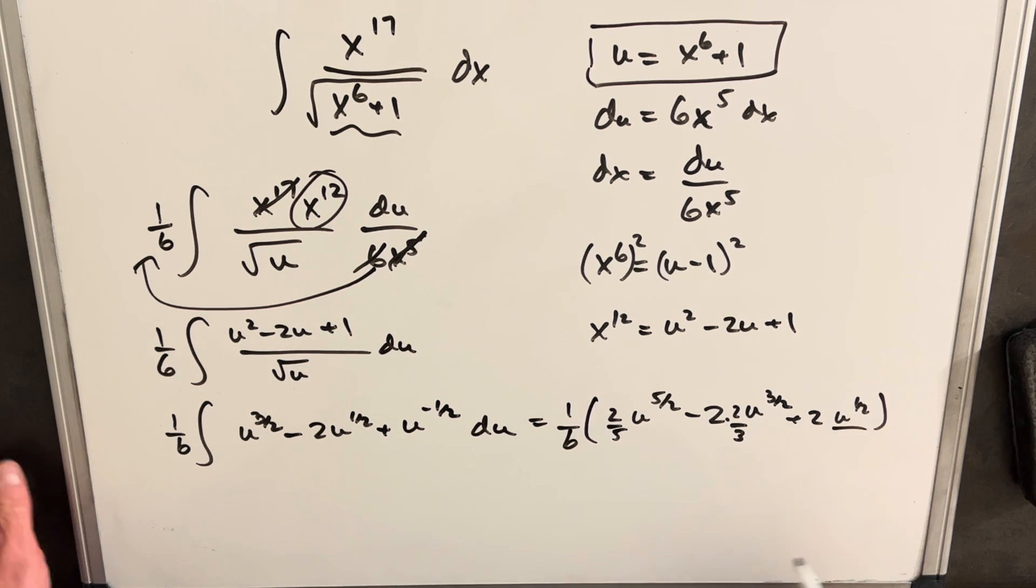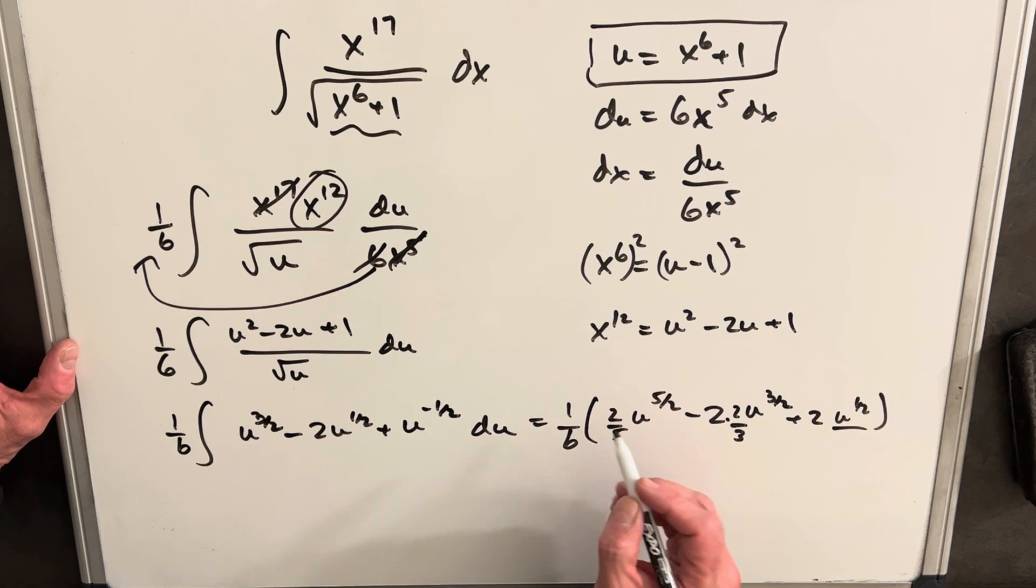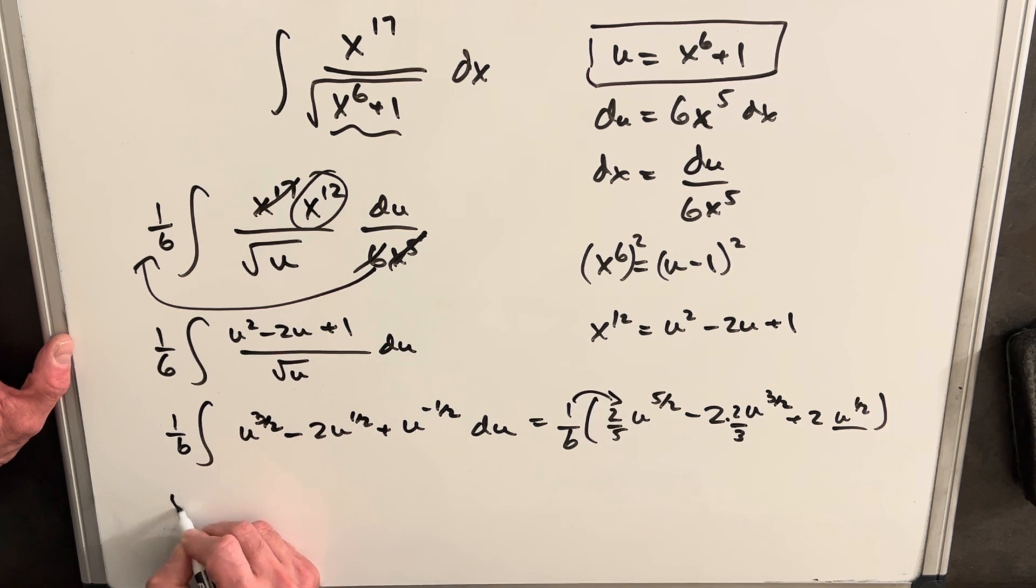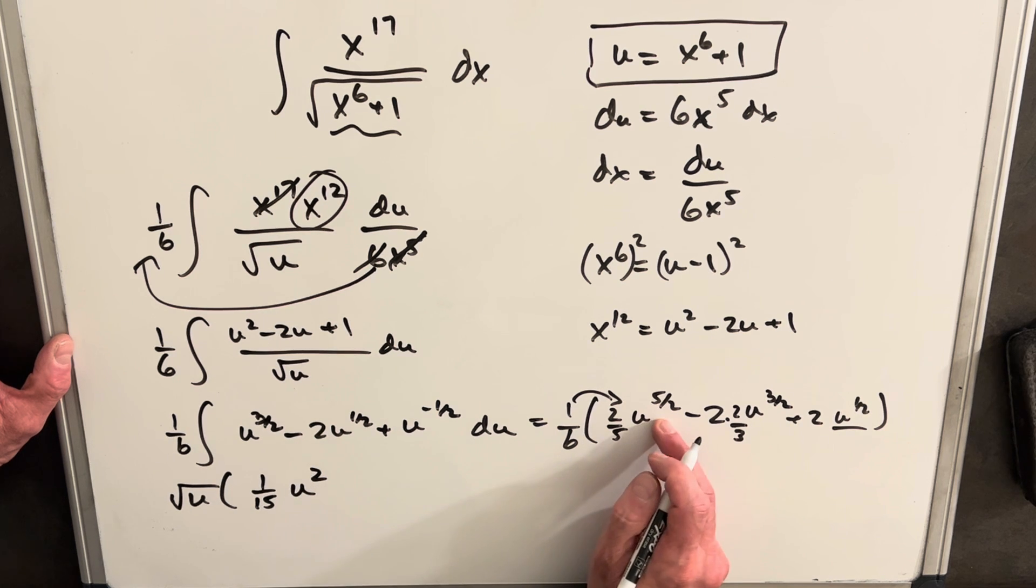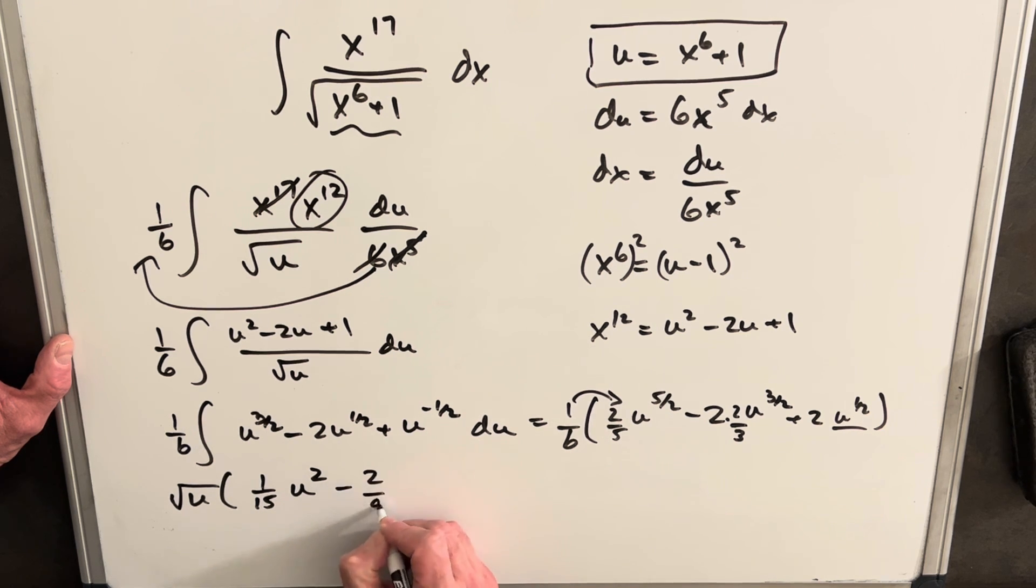Then what I'm going to do is I'm going to factor out a square root of u from this, and I'm also going to distribute in this 1 6th. So we're going to have our square root of u out front. Here we're going to have 1 15th u to u squared, and we factor out a square root of u here. We're going to have u squared there. Then for this term we're going to have minus 2 9ths, just u when we factor that out. And then for our last term we're going to have 1 3rd.